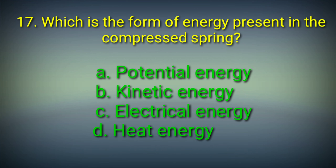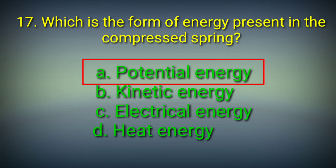17th question: Which is the form of energy present in a compressed spring? Options: A. Potential energy, B. Kinetic energy, C. Electrical energy, D. Heat energy. Answer: Option A. Potential energy. Potential energy is the form of energy present in a compressed spring.